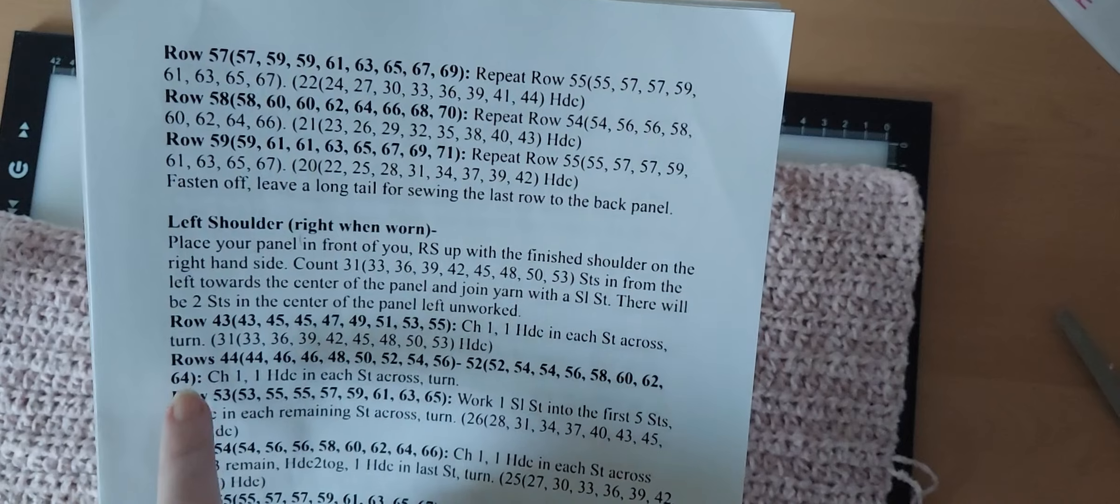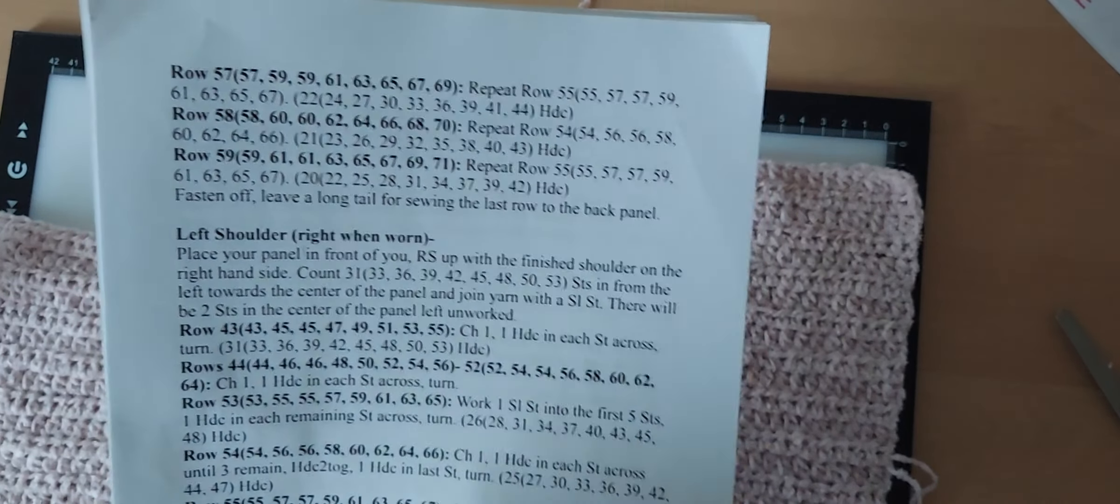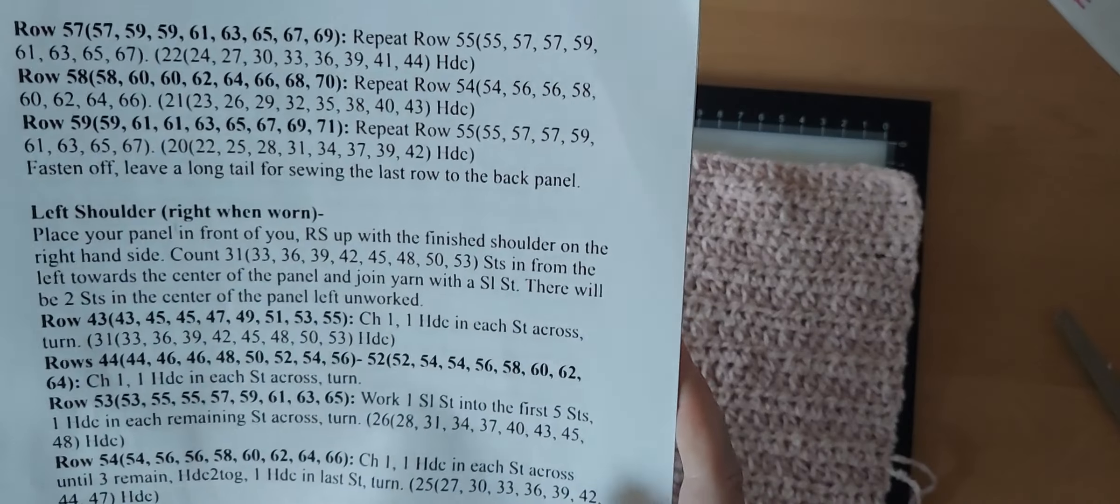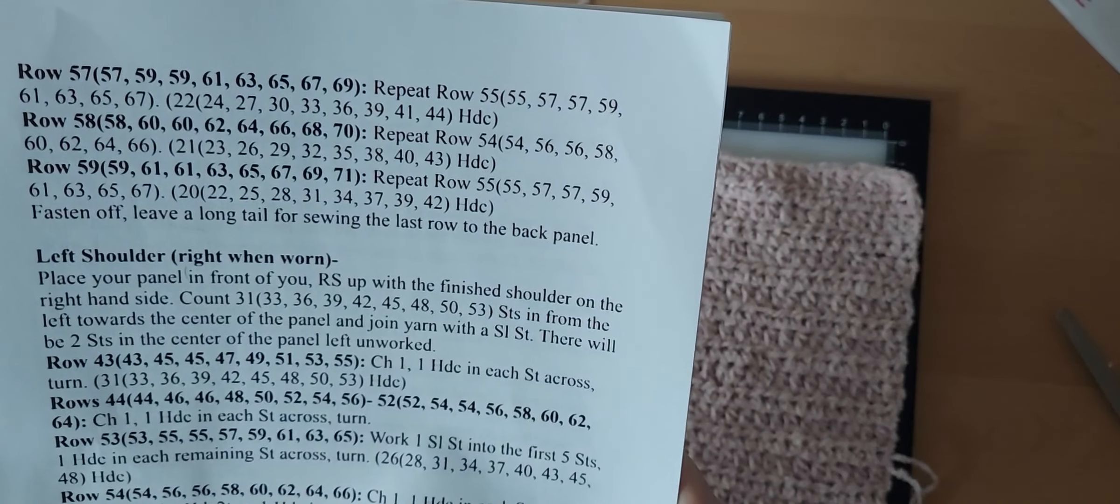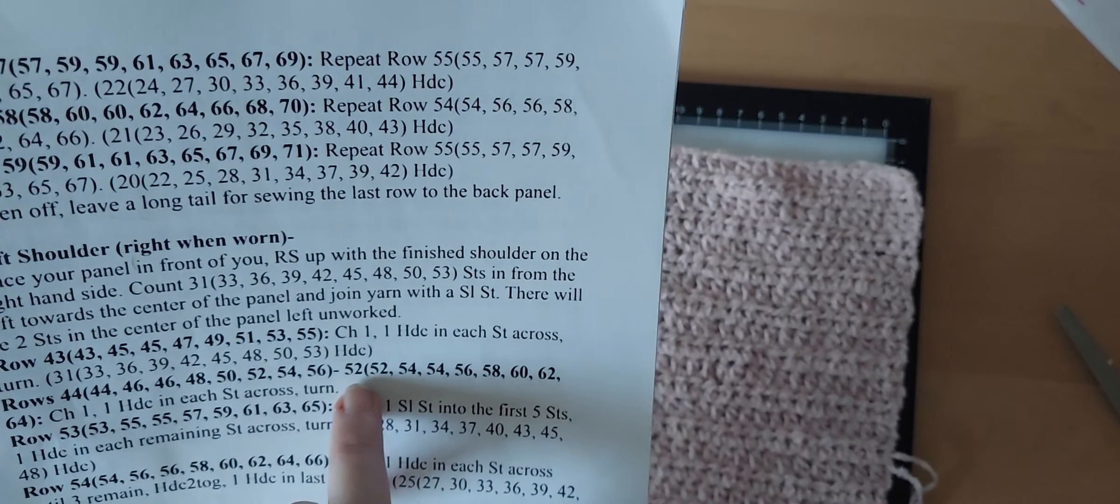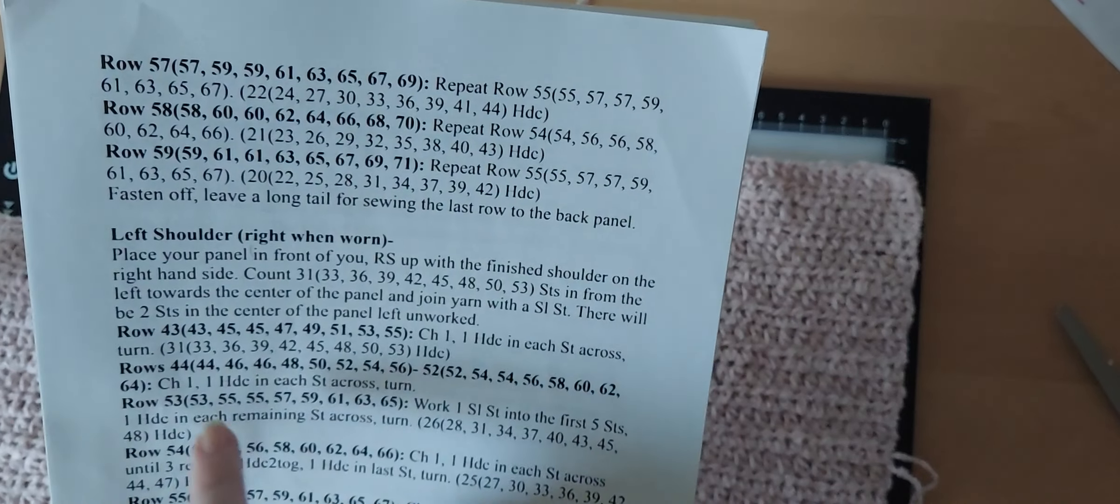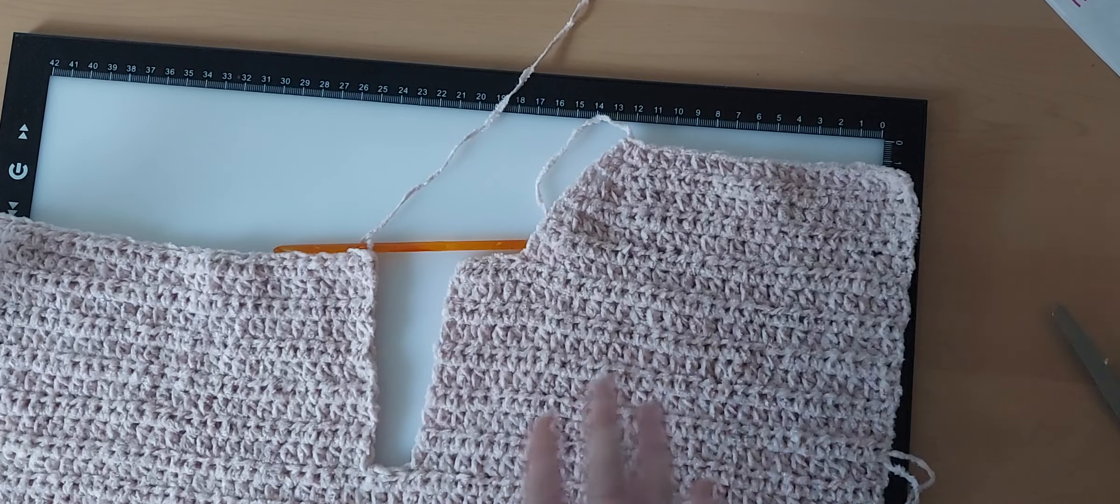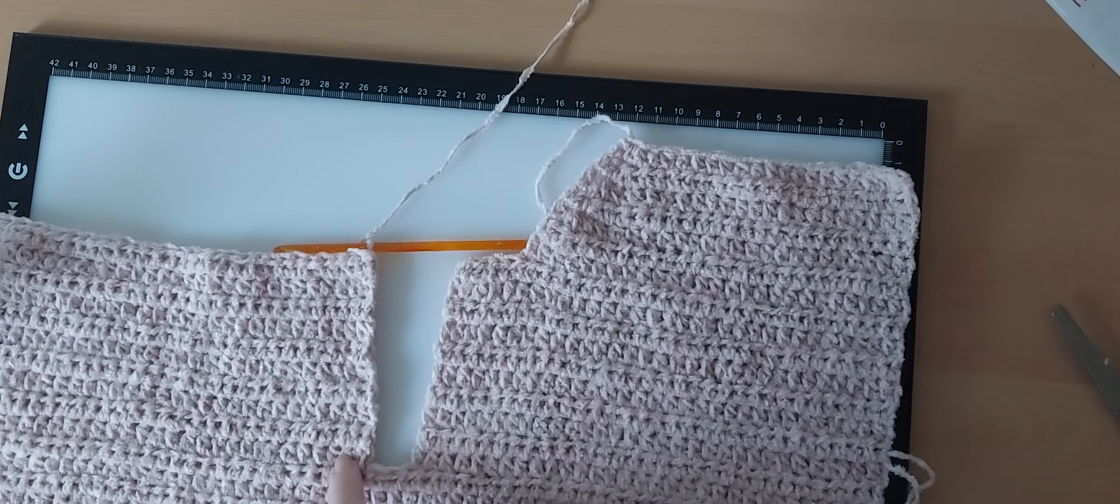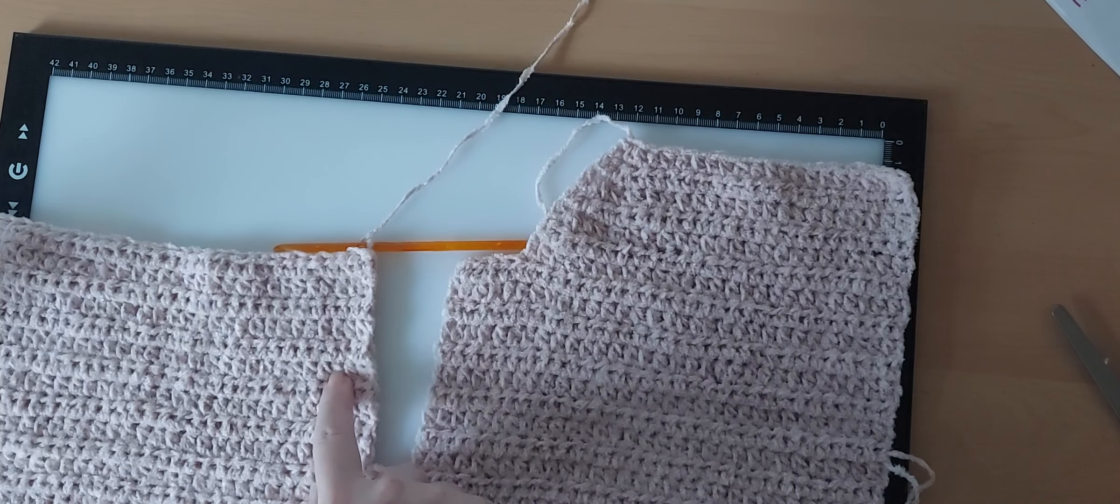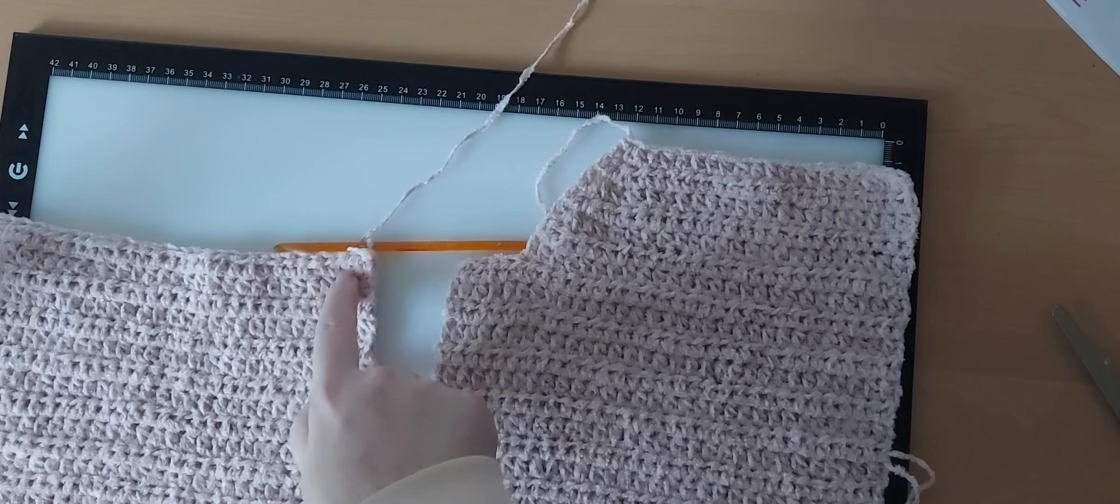The first part of the pattern for the left shoulder says, as we did in the previous video, we joined with a slip stitch, leaving 2 stitches unworked in the center, and then for rows 43 through 52, again for me, because I'm doing the extra small, we just chained 1 and then half double crocheted back and forth.